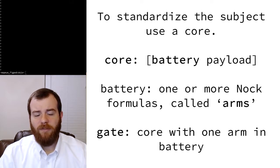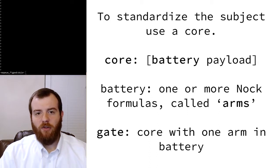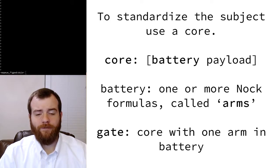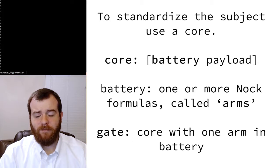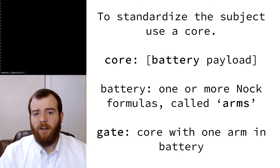Once your NOC programs get beyond a certain level of complexity, you'll want your subject to be structured a certain way. That way, your NOC formulas will have certain addresses that they know to go to when looking for a particular piece of information. So to standardize the subject, we use cores. Our subject will be structured as a core. A core is a cell whose head is a battery and whose tail is a payload. The battery is one or more NOC formulas called arms, but an arm isn't just any NOC formula.